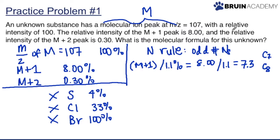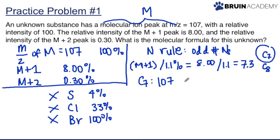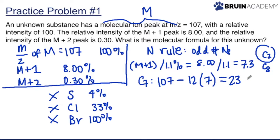Let's figure out the number of carbons by looking at what AMU we have left. For C7: 107 minus (12 × 7) equals 107 minus 84, which gives us 23 AMU remaining for oxygen, nitrogen, and hydrogen.